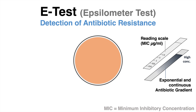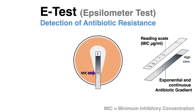This test is considered quantitative since the MIC can be determined. The MIC, short for minimum inhibitory concentration, indicates how much of an antibiotic is needed to inhibit bacterial growth. The test strip is carefully placed on the agar plate and will immediately release antibiotic to the surface. After an incubation period, it is expected to see a zone around the strip with no bacterial growth. The MIC is determined as the indicated concentration at which the end of the zone and the reading scale coincide.